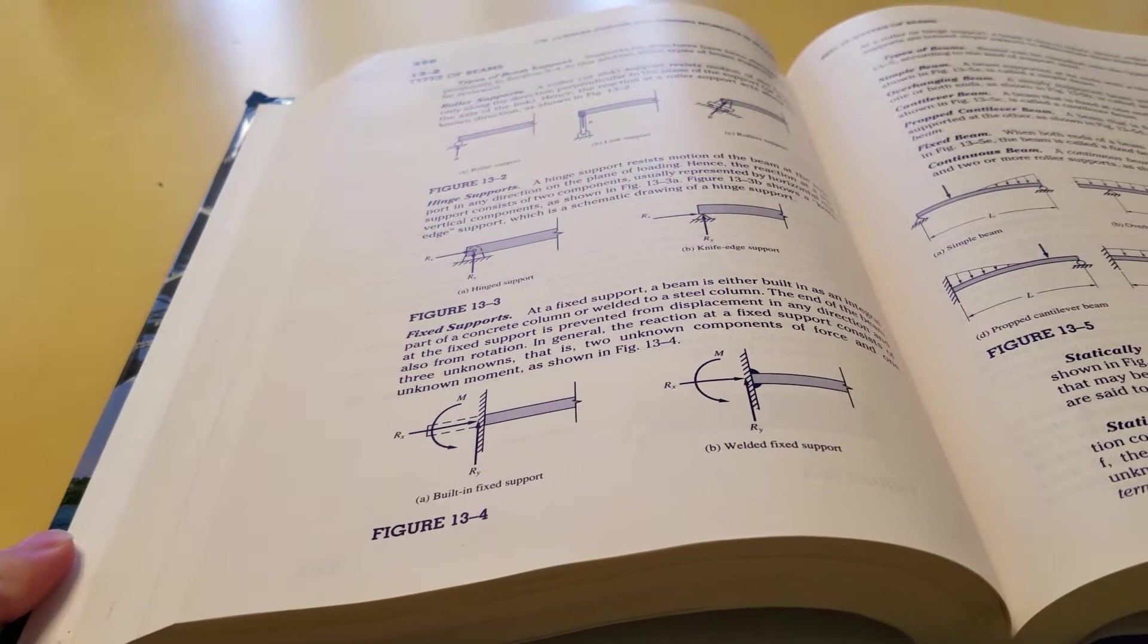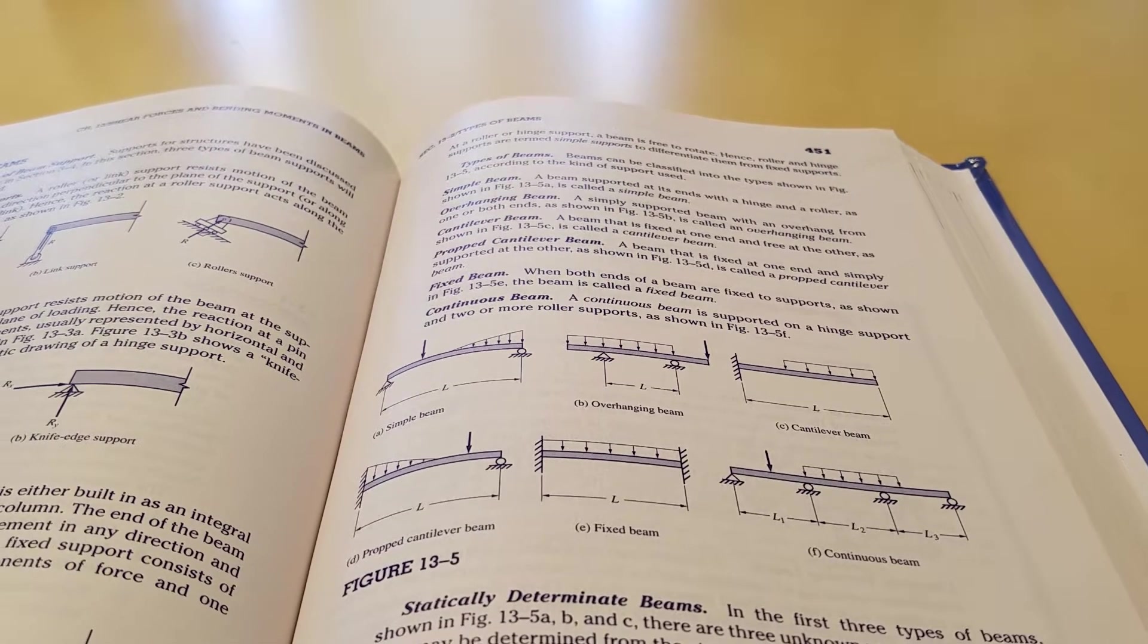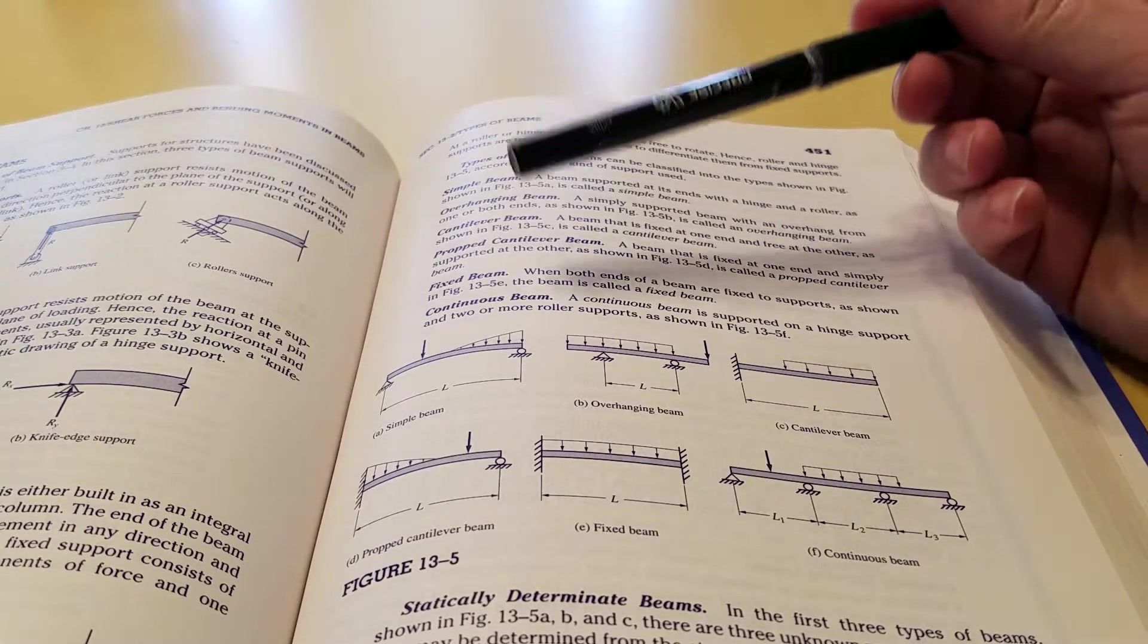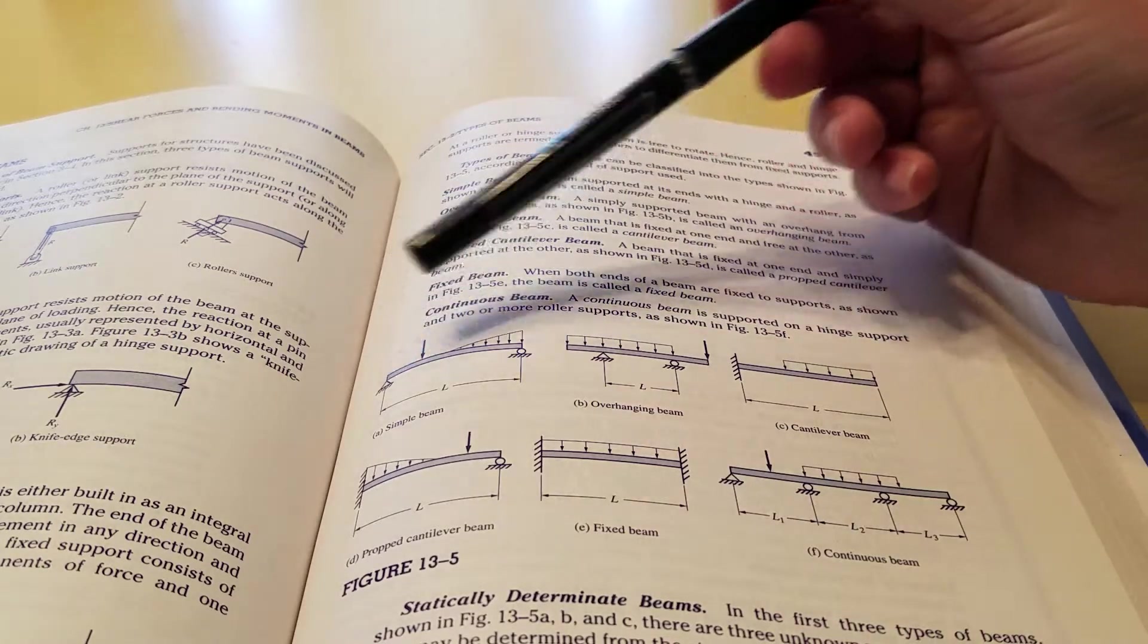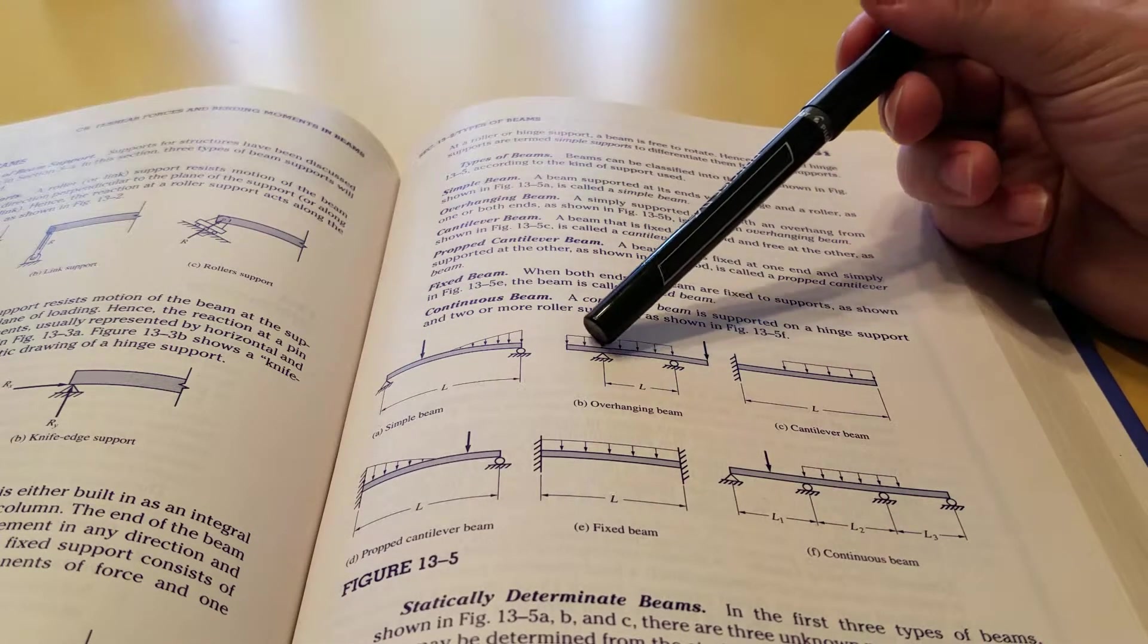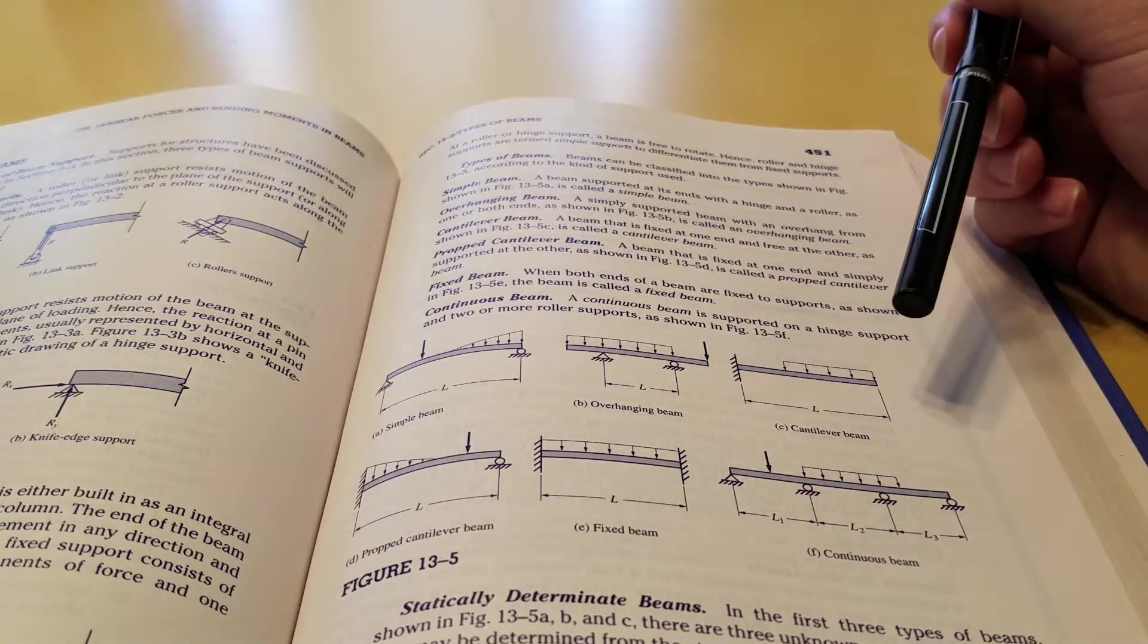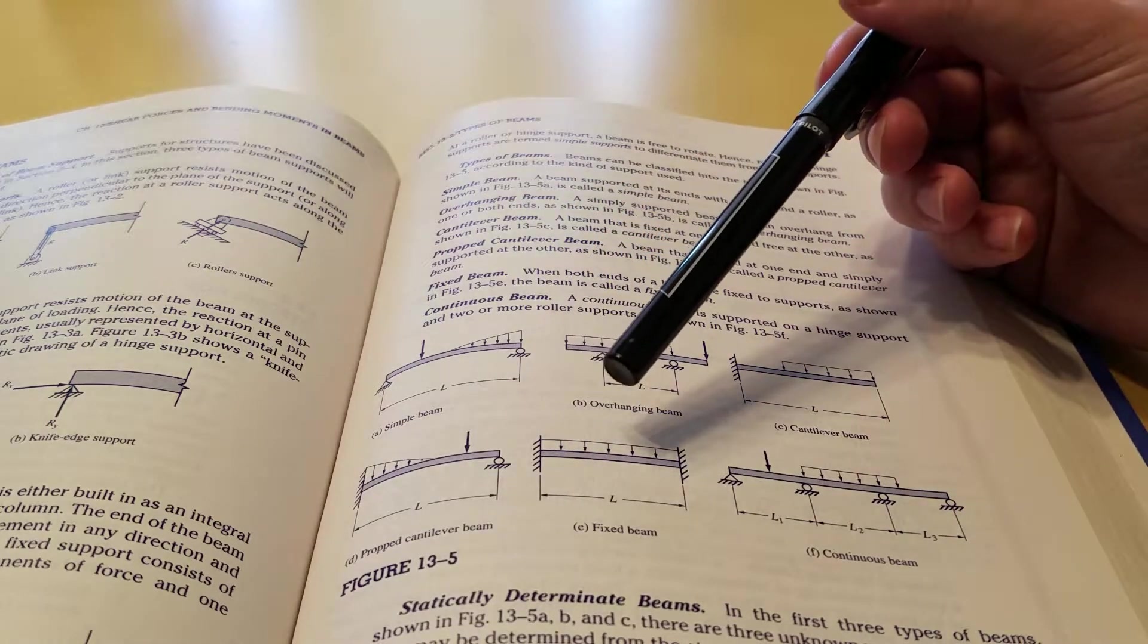A fixed support gives you a cantilever beam. This is kind of a flashback to chapter 3 in some cases. They're saying a simply supported beam has two supports on each end, and an overhang has two supports with extra beam out from it. They have all these different types of cantilevers as well.